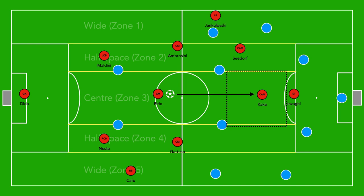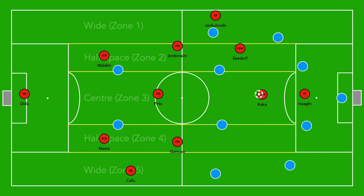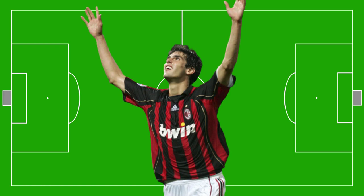Once Kaká was free centrally, this is when we would see Pirlo really excel — playing a pass that broke the line of the opposition's midfield to free Kaká in that dangerous space. Once Kaká received the ball there, we would often see him turn, dribble at a centre-back one-on-one, maybe take a shot or slip the striker in to score.